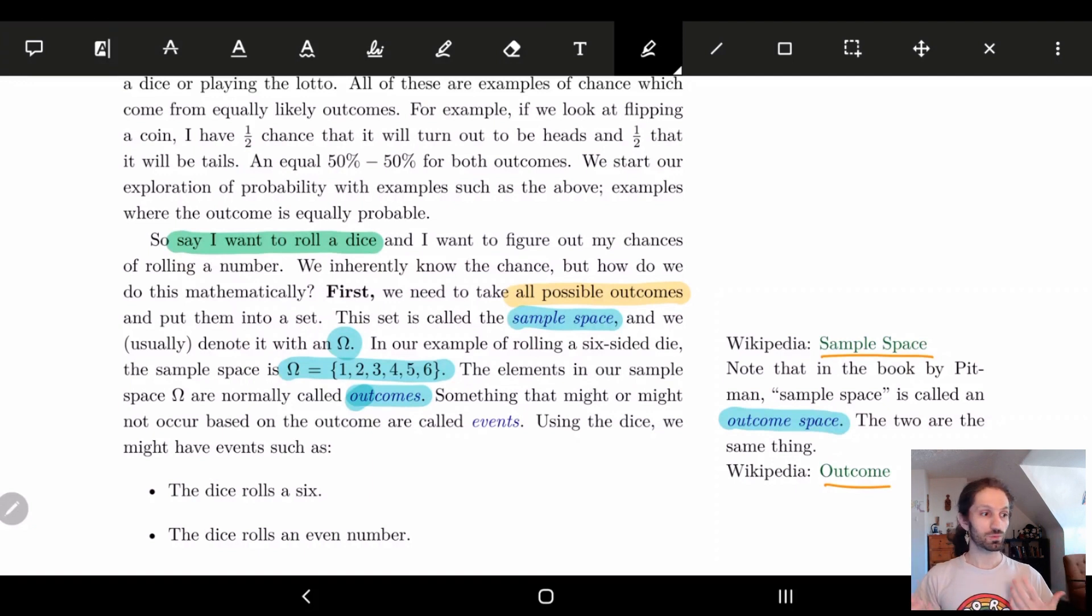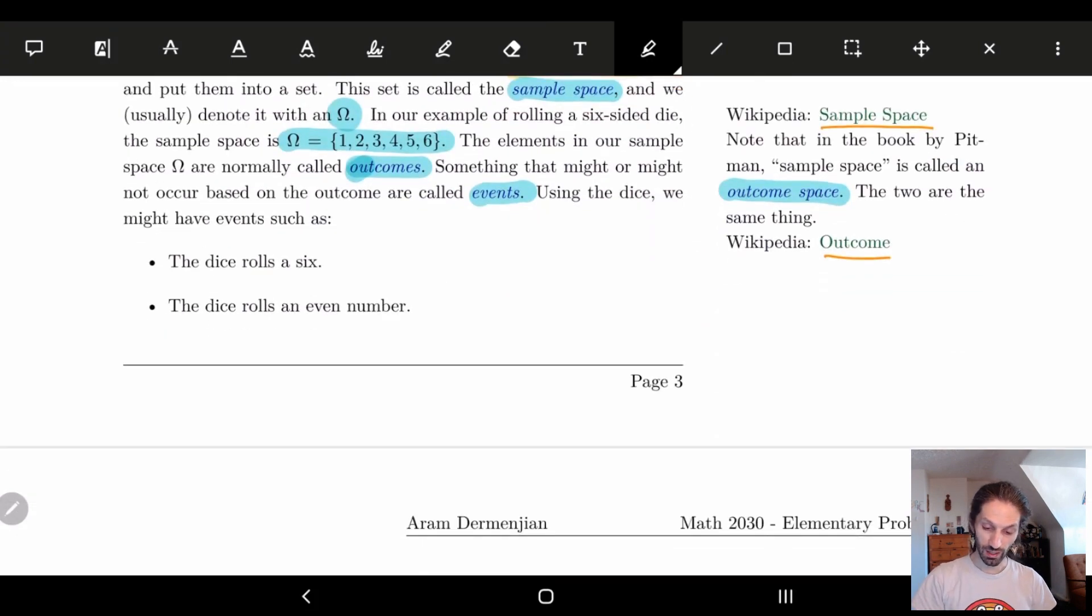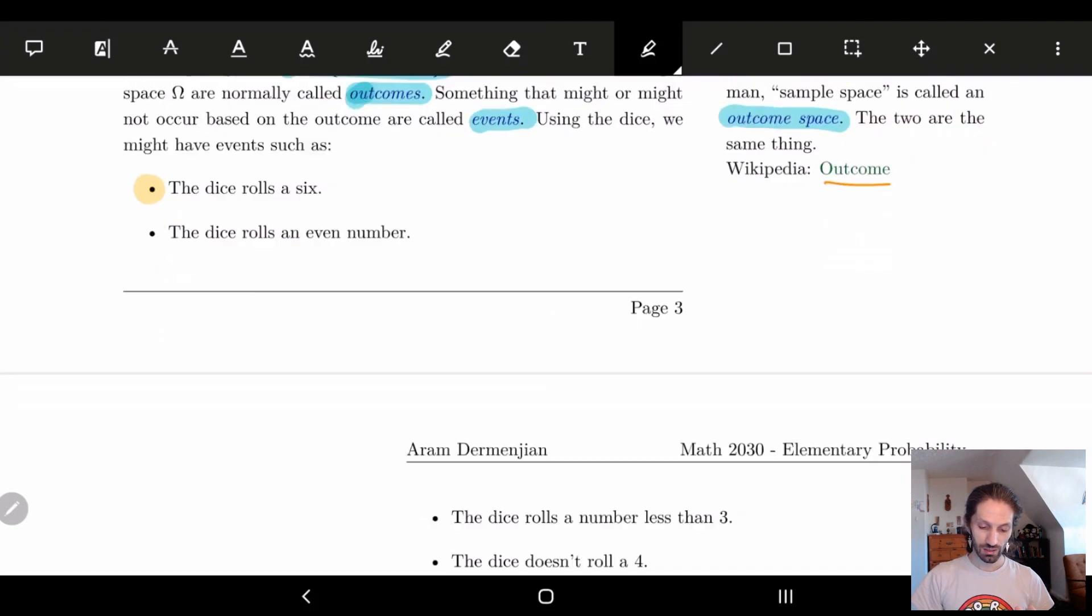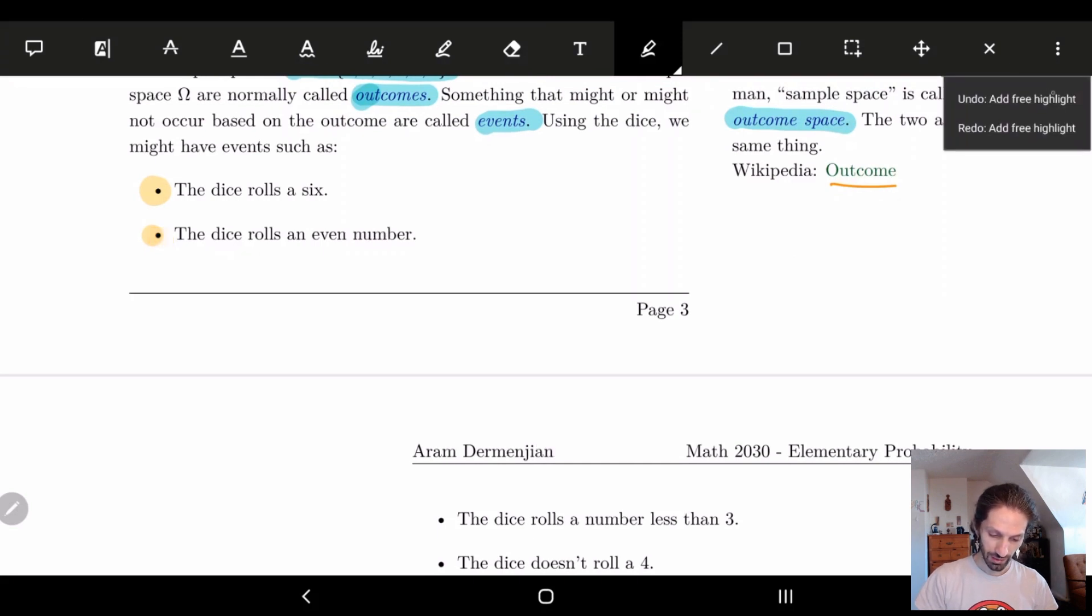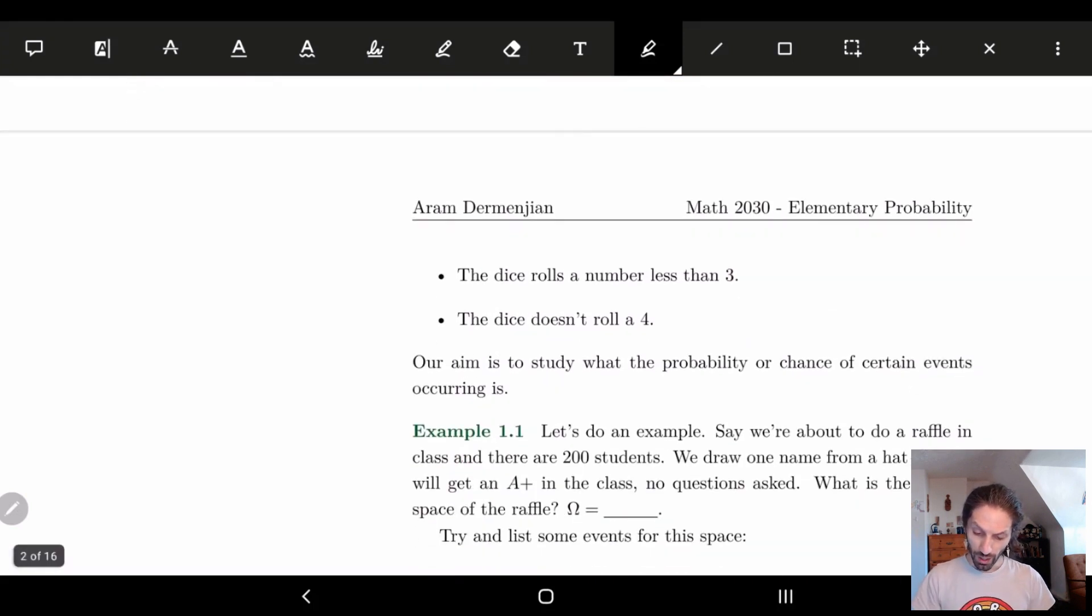Something that may or may not be an outcome is what we call an event. Rolling a number is an event. We'll get more precise with all of this later on, but for now we're laying the groundwork. Some of the events we might have, for example, is the dice rolling a six. But we're not restricted to just asking, does it roll this number? We can ask more complicated events such as does the dice roll an even number, or does the dice roll a number less than three, or the dice doesn't roll a four. These are all different options we have when we're talking about rolling a dice.